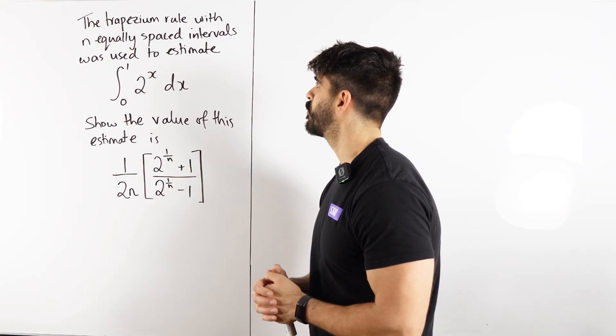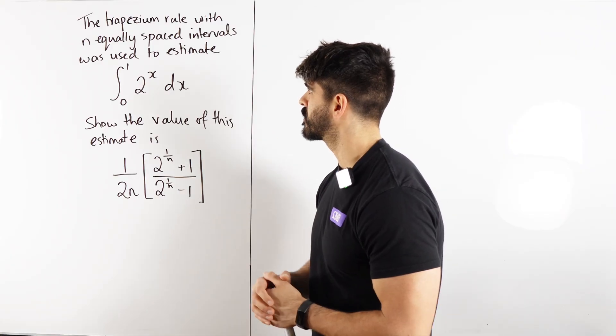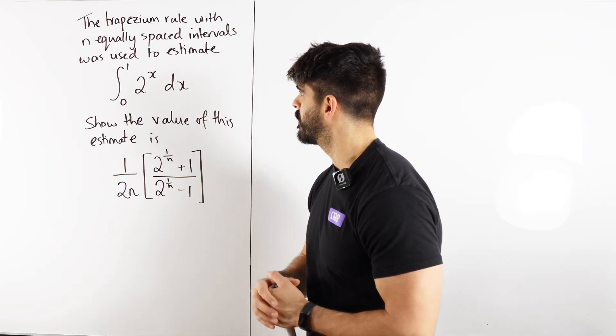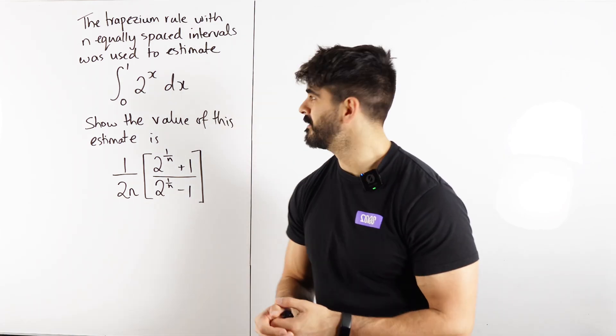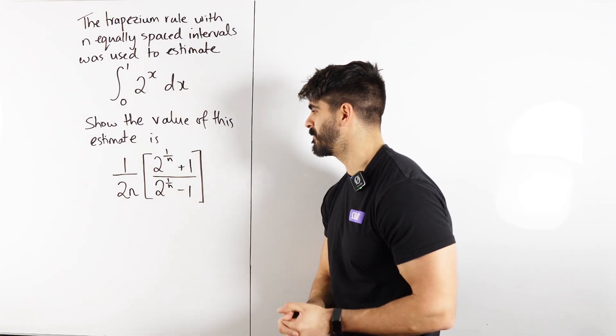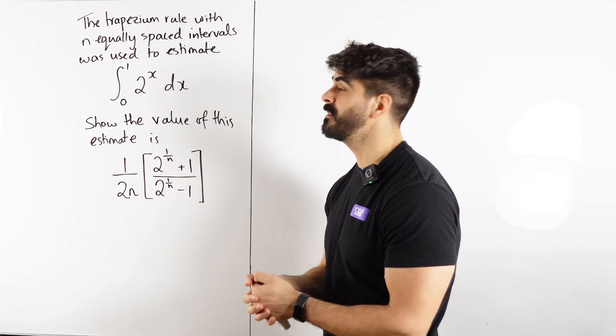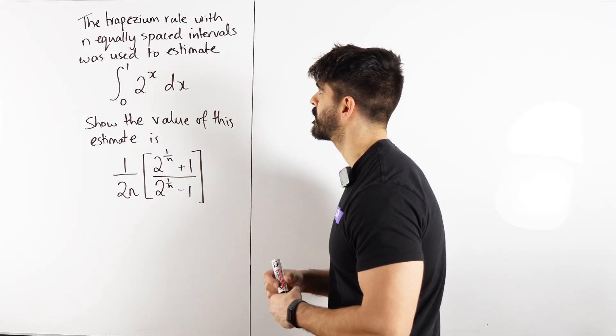It says the trapezium rule with n equally spaced intervals was used to estimate this integral. Show the value of this estimate as this. Obviously it's dependent on n because we're doing n equally spaced intervals.